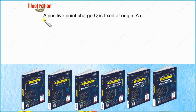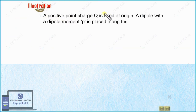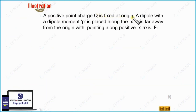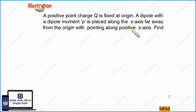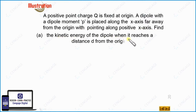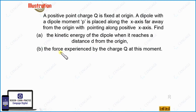In the next illustration, a positive point charge Q is fixed at the origin. A dipole with dipole moment P is placed along the x-axis, far away from the origin — that means at a large distance — and it is pointing along the positive x-axis. Find, part one, the kinetic energy of the dipole when it reaches a distance d from the origin, and part two, the force experienced by the charge Q at this moment.